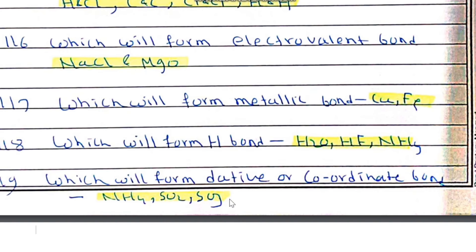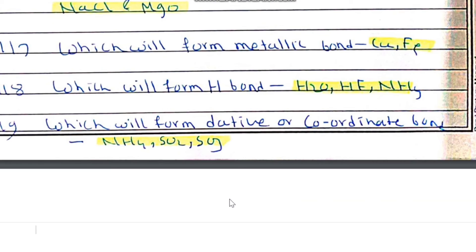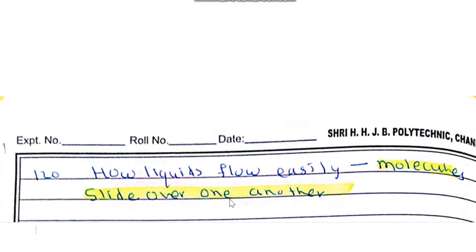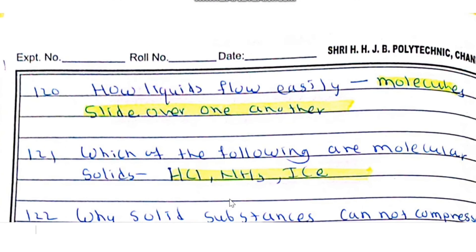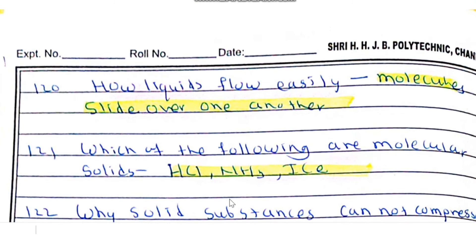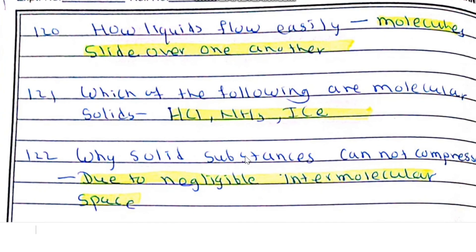Liquids flow easily because their molecules slide over each other. HCl, NH3, and ice are examples of molecular solids.